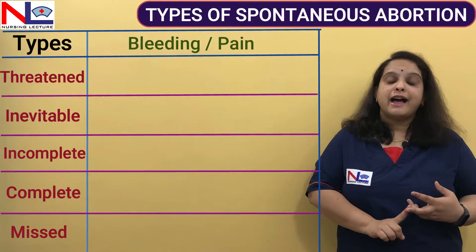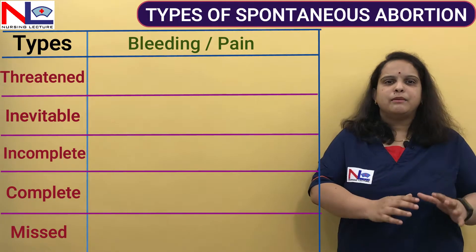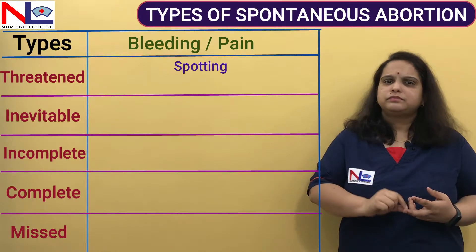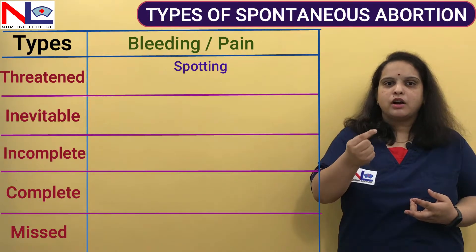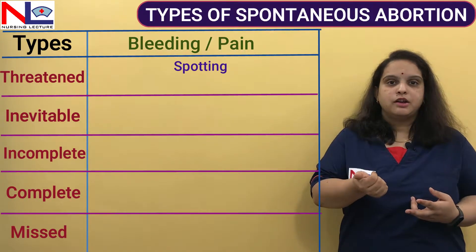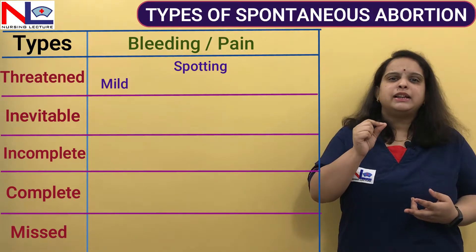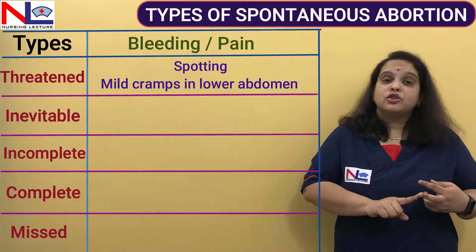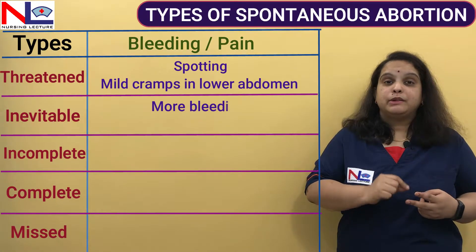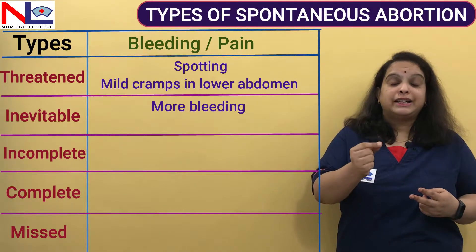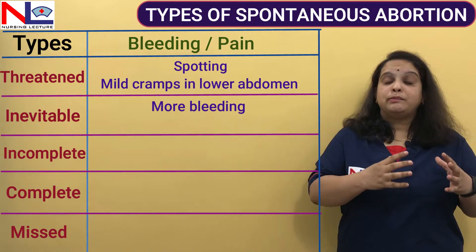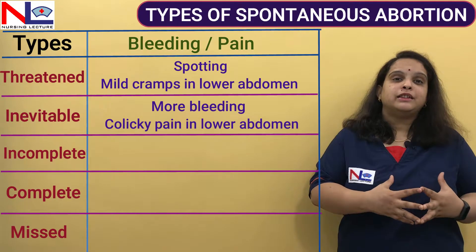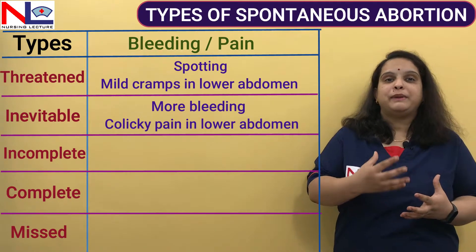The second feature is bleeding status and pain. In threatened abortion, there is only mild spotting — either fresh blood or a brownish discharge — along with mild cramp in the lower abdomen. In inevitable abortion, there is mild to moderate bleeding, considerably heavier than in threatened abortion, and there is colic pain located in the lower abdominal area.